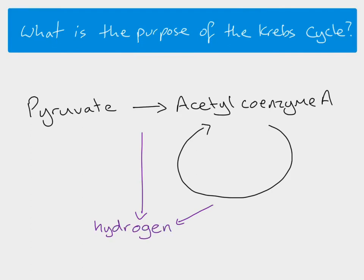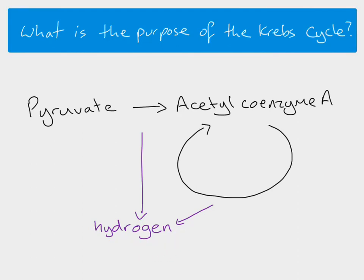The main point of the Krebs cycle taking place is to produce hydrogen. Because hydrogen is released from the molecules involved in the Krebs cycle, hydrogen carriers get reduced, and those reduced hydrogen carriers can take the hydrogen over to the electron transport chain.